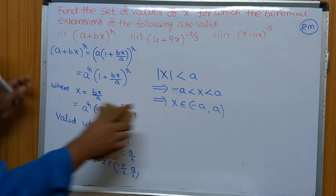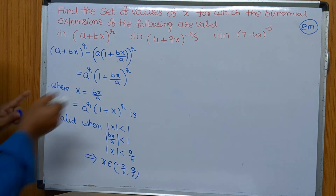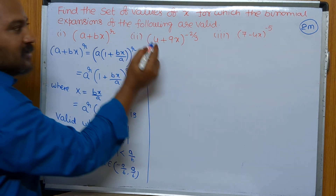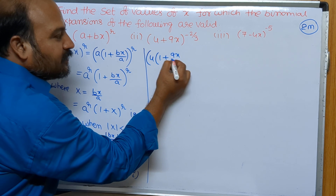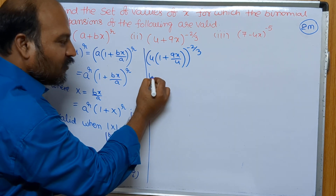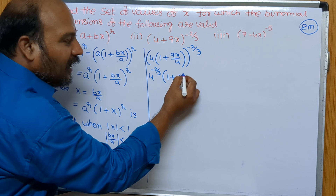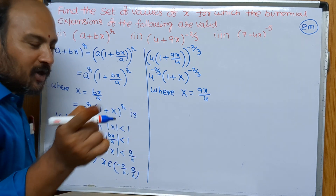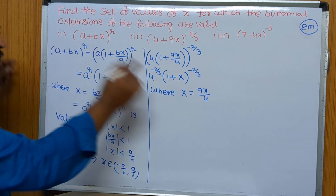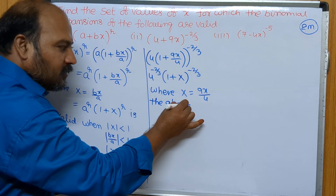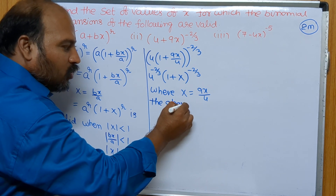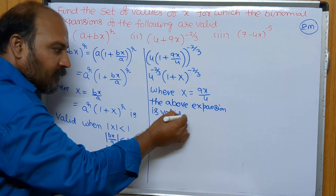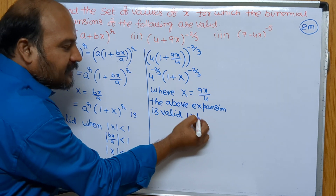I will explain a similar procedure with the next question. Observe carefully. First, what we have to write — this expansion in the form (1 + x)^n. Taking 4 common, this expansion is (1 + 9x/4)^(−2/3), which equals 4^(−2/3) into (1 + X)^(−2/3) where capital X equals 9x/4. I hope you understand this procedure. The above expansion is valid when mod X is less than 1.